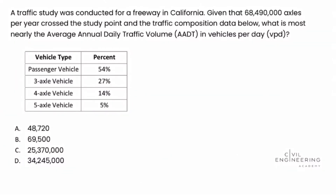Welcome back to Civil Engineering Academy. This is Matt and today we're working a problem from the transportation breadth section of the Civil PE exam. A traffic study was conducted for a freeway in California. Given that 68,490,000 axles per year crossed the study point and the traffic composition data below, what is most nearly the average annual daily traffic volume, AADT, in vehicles per day, VPD?